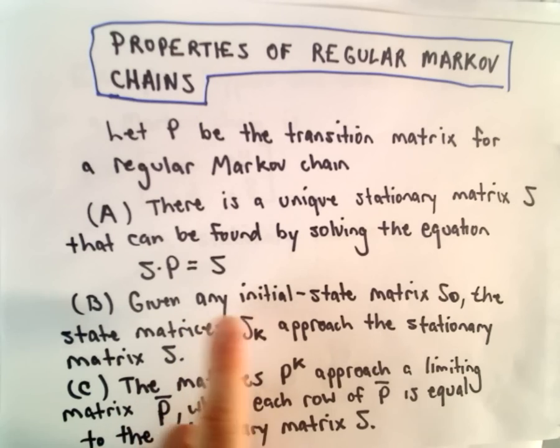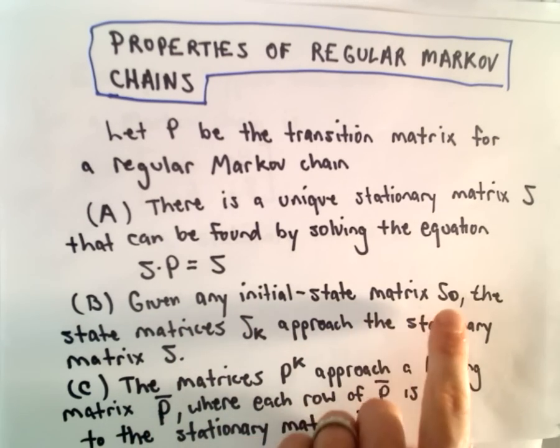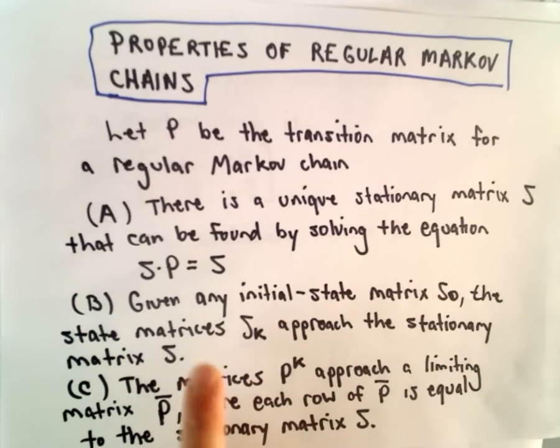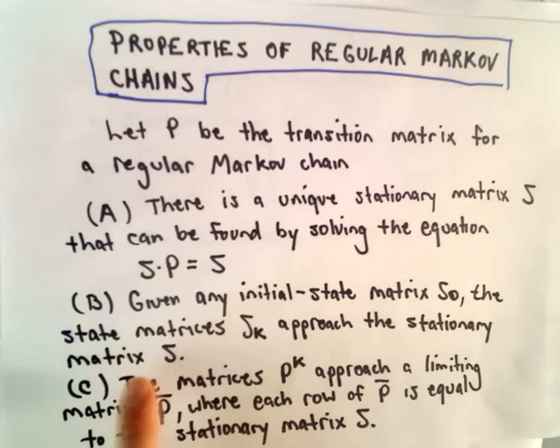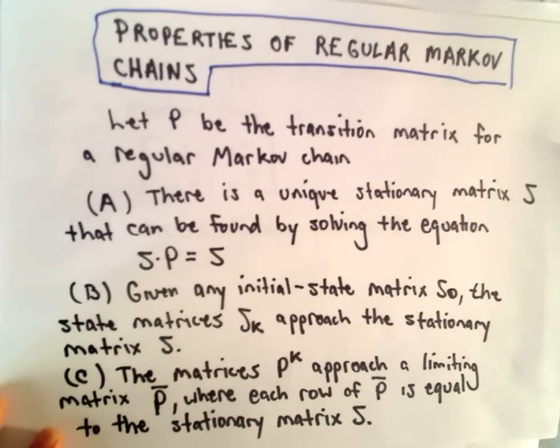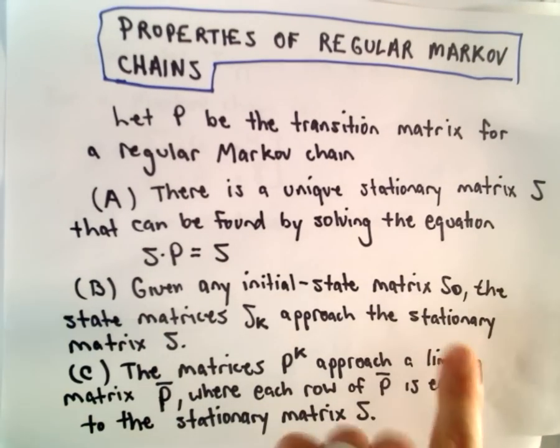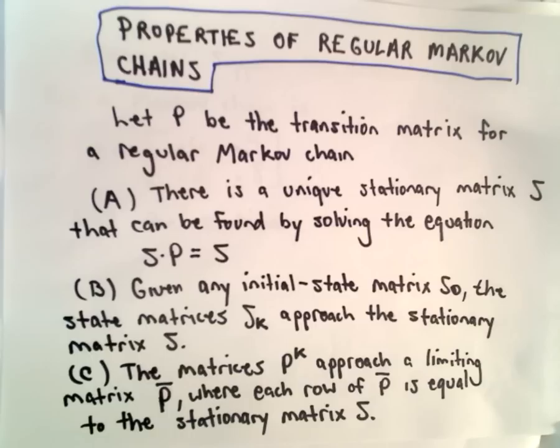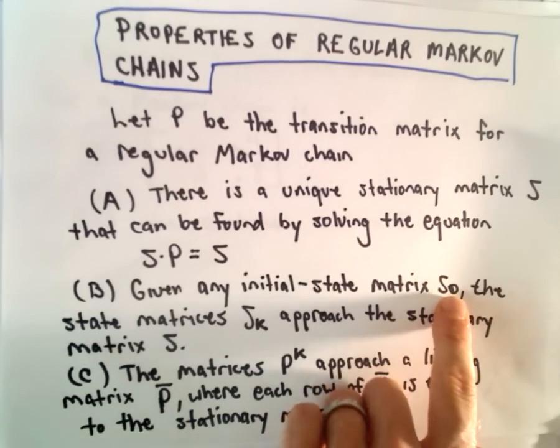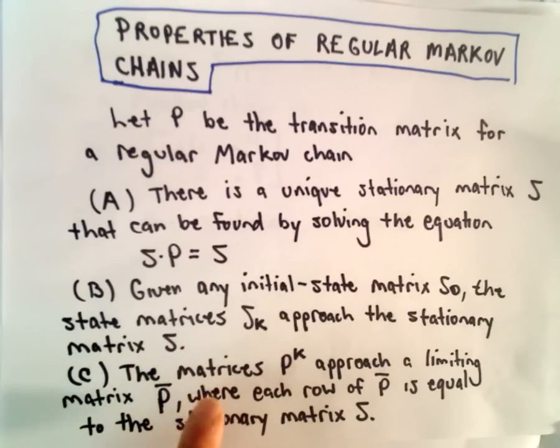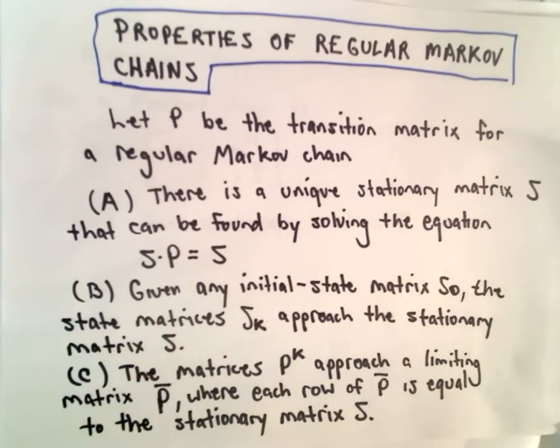Another property says given any initial state matrix S₀, the state matrices Sₖ will approach that stationary matrix S. If you think about that in terms of market share, it says no matter what the initial market share is, it's always going to approach the same overall market share in the long run.